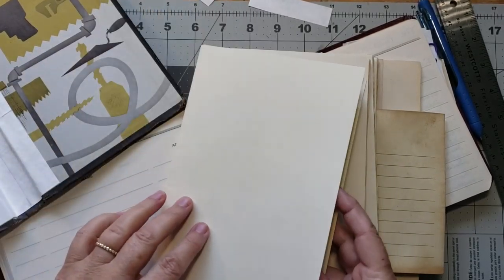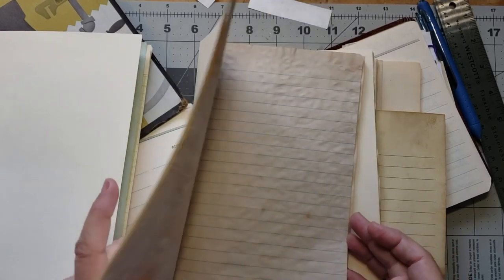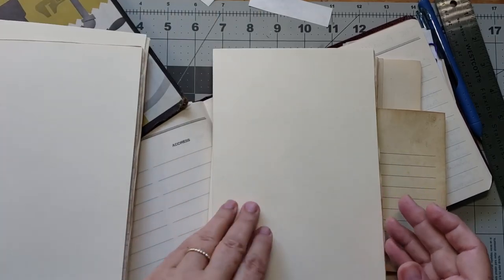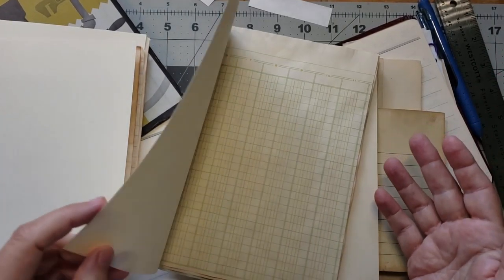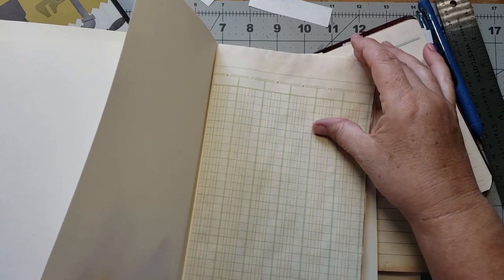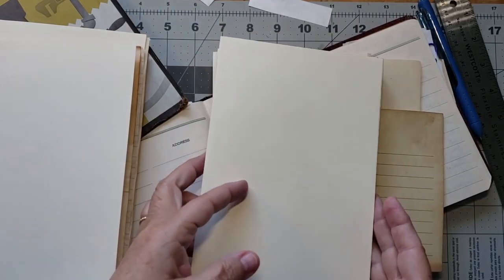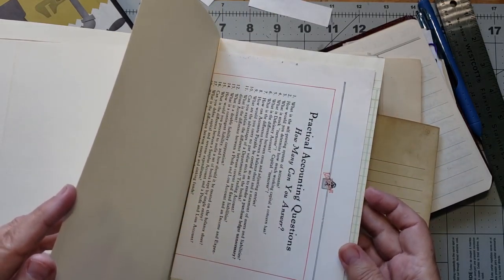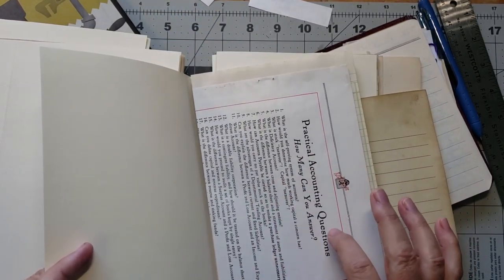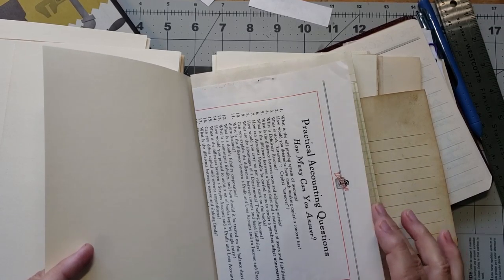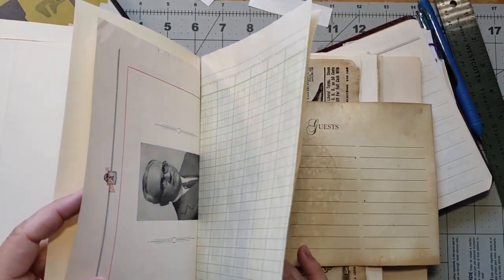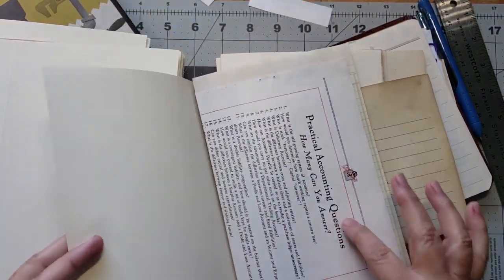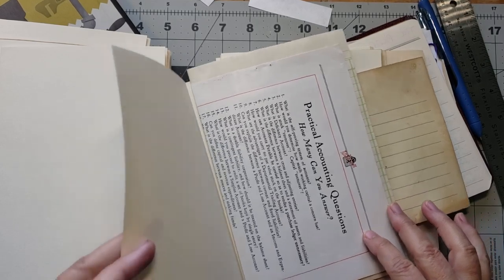Now this one, I usually like my first signature to have a really nice first front page that when you open it, it sort of goes boom, aren't you glad you opened this book? So I'm just going to take a look and see which one. I like that, this is from an old accounting book from 1940-something, from the 1940s. I kind of like that, practical accounting questions, how many can you answer? I like that one.